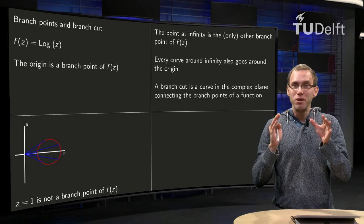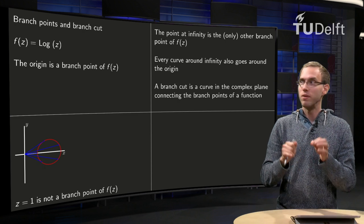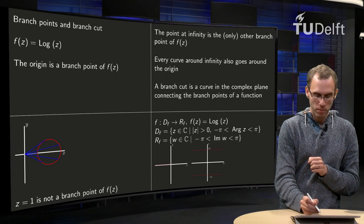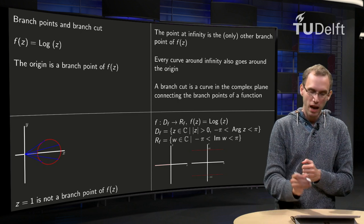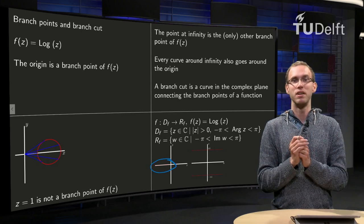Now, how do we prevent this circling around? So what we do is the following, we restrict the domain as follows. Here we have the domain, and we say you can get everywhere except here for example at the negative real axis, we have the point at 0 and infinity.